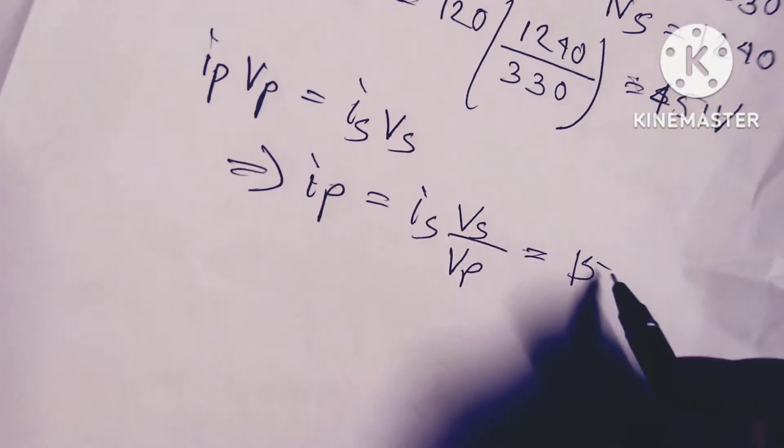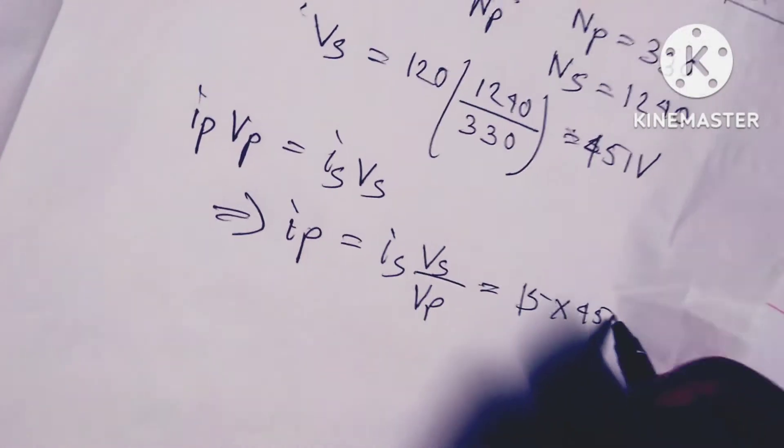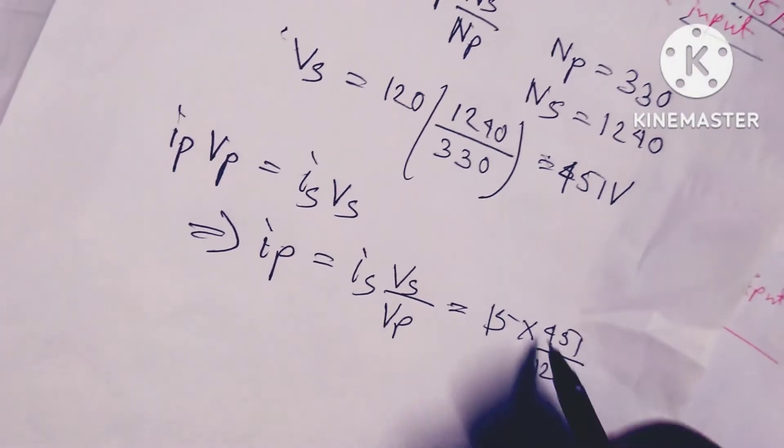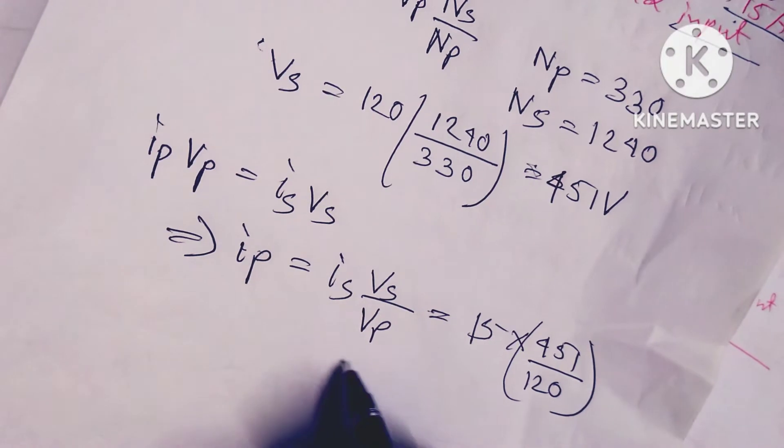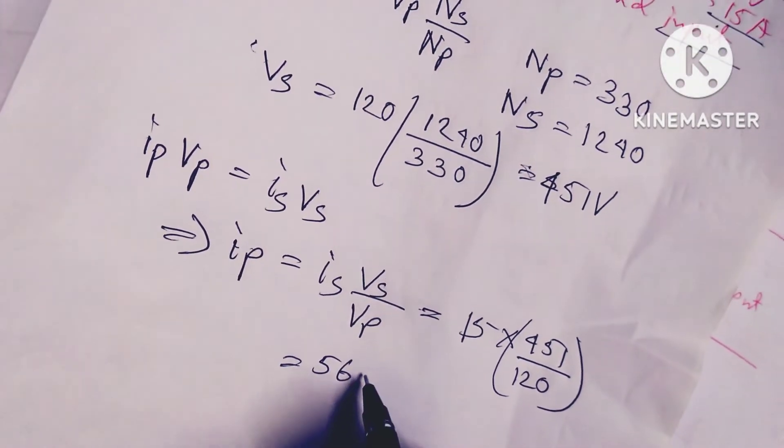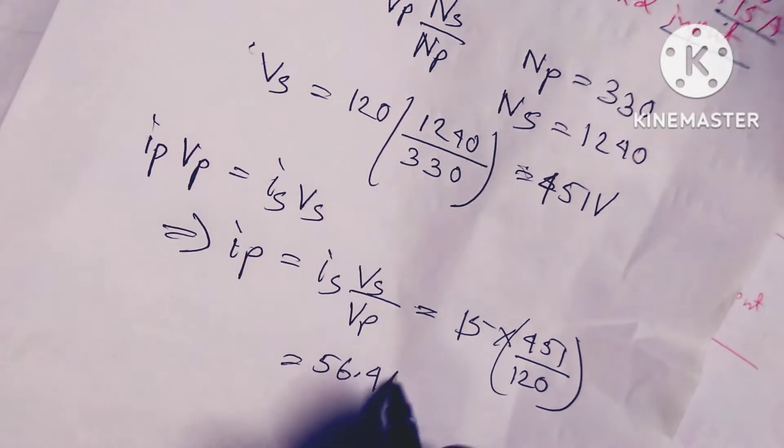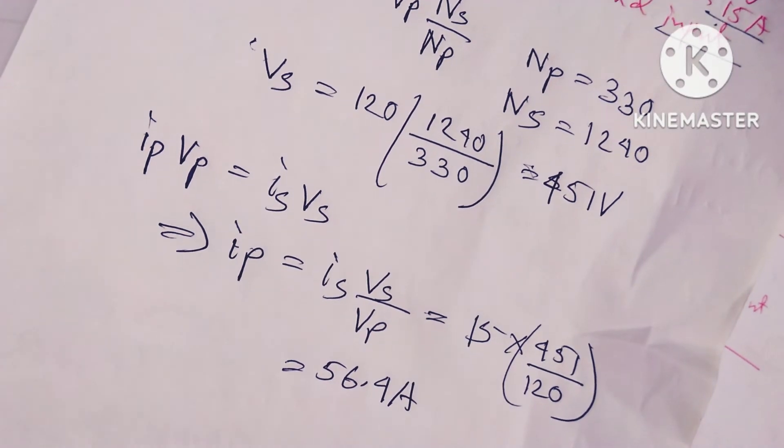So 15 times 451 divided by 120. So I get the value is 56.4 amperes.